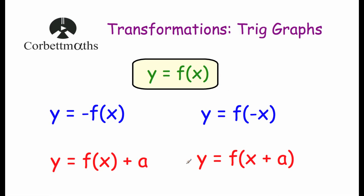Then we've got our translations in red. y = f(x) + a, where the plus a is outside of the brackets, will move the graph a units upwards. So if it was plus one, the graph moves one upwards; if it was minus three, it would move three downwards. And y = f(x + a) will translate the graph a squares to the left. Those are the transformations we need to know at GCSE level.